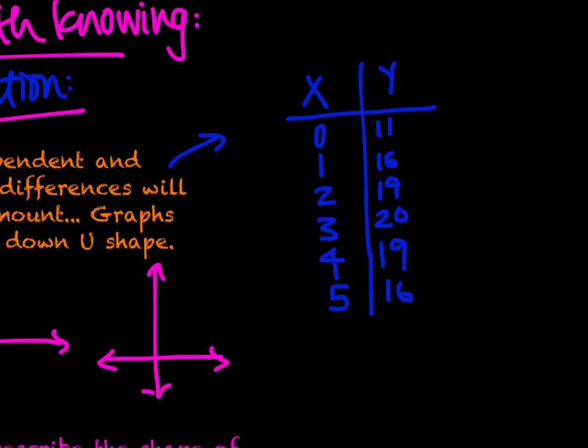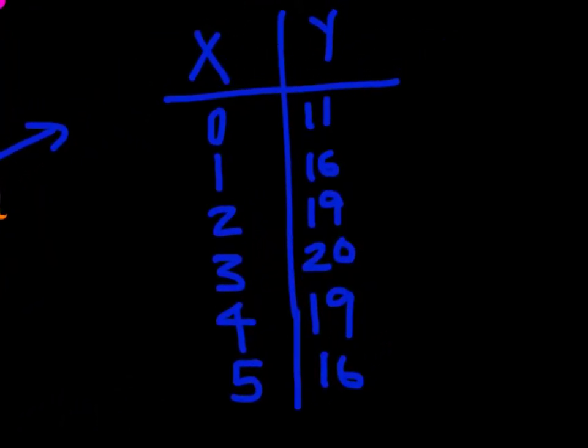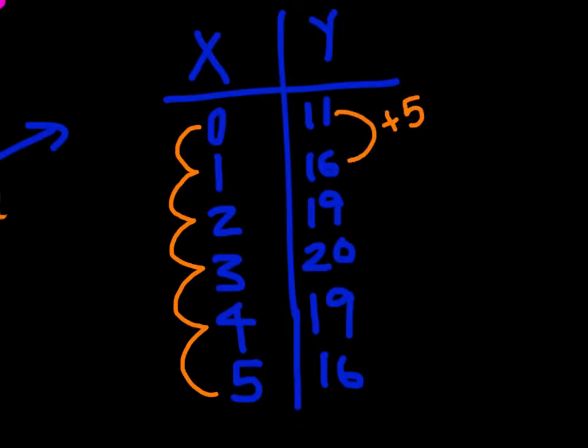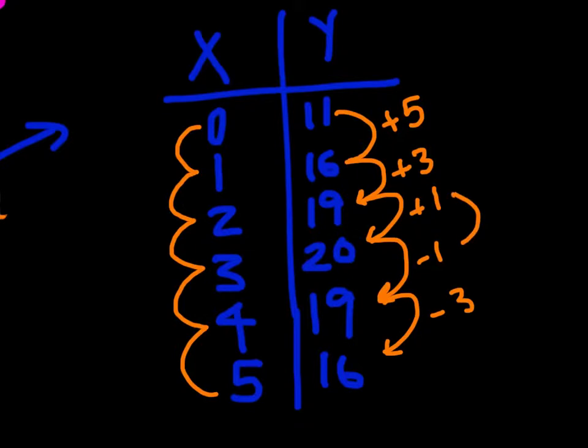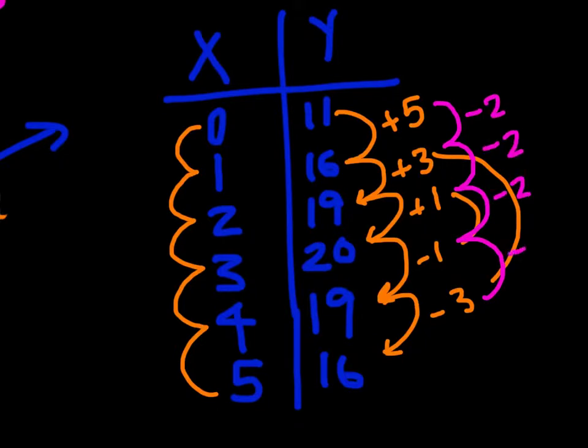Here is our x and y table for this situation. If I look at x, we have an increase of 1 each time. If we look at our y, we have an increase of 5, then an increase of 3, an increase of 1, and then we start decreasing by that same sort of pattern. What's interesting about this, the differences between each of these numbers is a constant decrease of 2. This is what's called a second difference, and we'll talk about this more in Investigation 2 or 3.